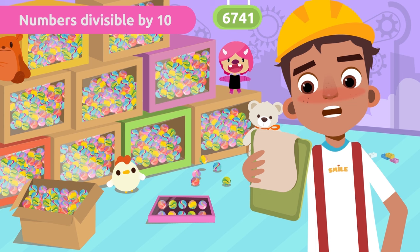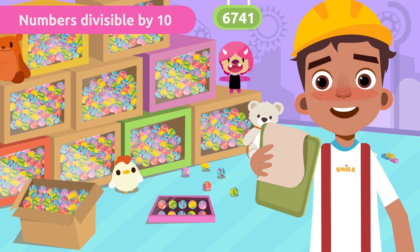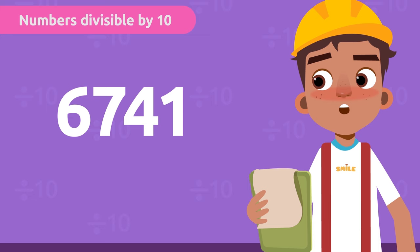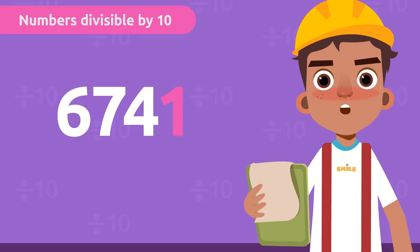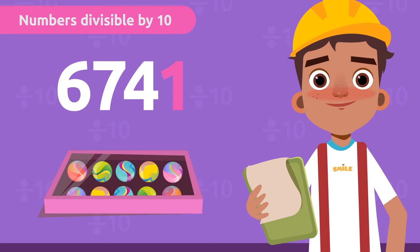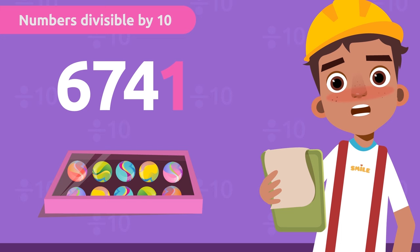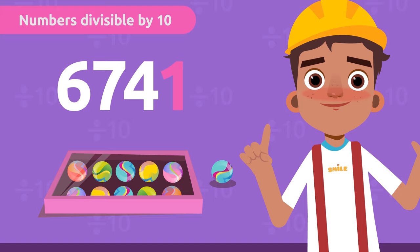Numbers divisible by ten. We have 6,741 marbles. We are putting ten in each box. Now we need to know the divisibility rule for the number ten so that there are no marbles left over. We just have to check if the number we want to divide ends in zero. There will be marbles left over because the number 6,741 is not divisible by ten. Can you guess how many we will have left over? There will be one left over!